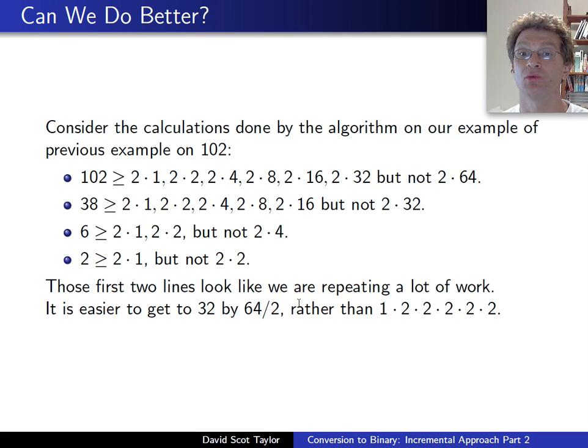And the way that we're going to not repeat work is to notice, well, if we want to get down to 32, instead of starting from 1 and continually doubling up to 32, it's easier to go from 64 down to 32, in this case, by just dividing by 2.